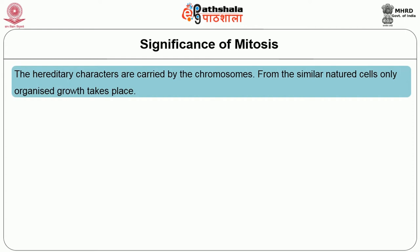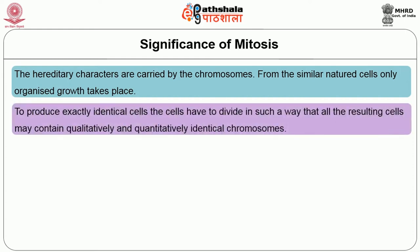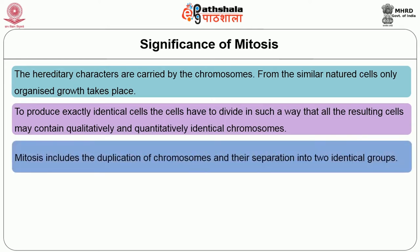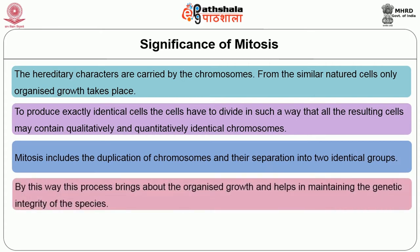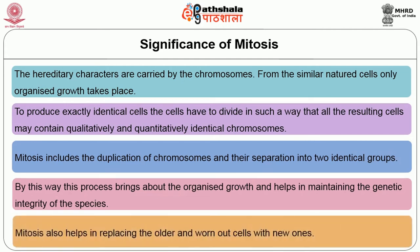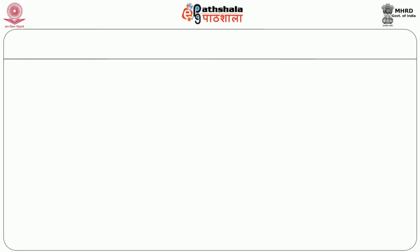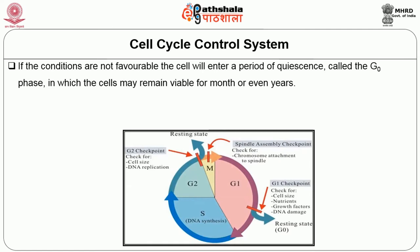The significance of mitosis: the hereditary characters are carried by the chromosomes. From similar-natured cells, only organized growth takes place. To produce exactly identical cells, all resulting cells must contain qualitatively and quantitatively identical chromosomes. Mitosis includes the duplication of chromosomes and their separation into two identical groups, bringing about organized growth and helping maintain the genetic integrity of the species. Mitosis also helps in replacing older and worn-out cells with new ones.